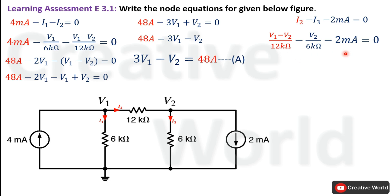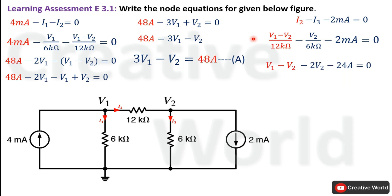To eliminate denominator values we multiply both sides by 12 kΩ. The 12 kΩ cancels with the denominator of the first term, leaving (V1 − V2). For the second term, 12 kΩ multiplied by V2/6 kΩ gives 2V2. For the constant, 12 kΩ multiplied by 2 mA — kΩ cancels with milli — giving 24.